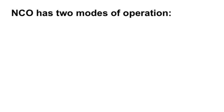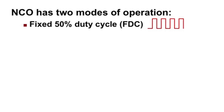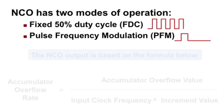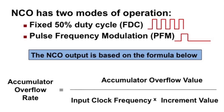The NCO has two modes of operation: a fixed 50% duty cycle mode and a pulse frequency modulation mode. The NCO output frequency is based on the rate of the accumulator overflow, as shown in this formula. The accumulator overflow rate is based on the ratio of the increment value to the accumulator overflow value. The increment value can be changed at any point via software to change the overflow rate and the output frequency.